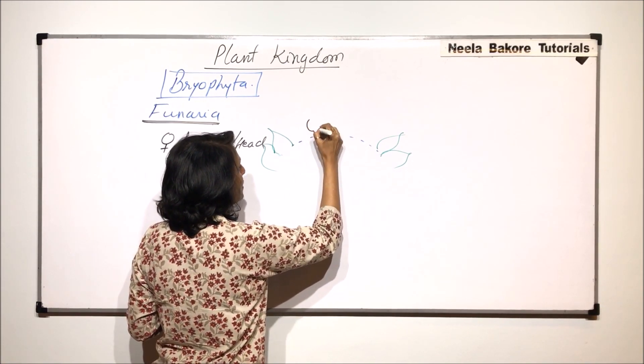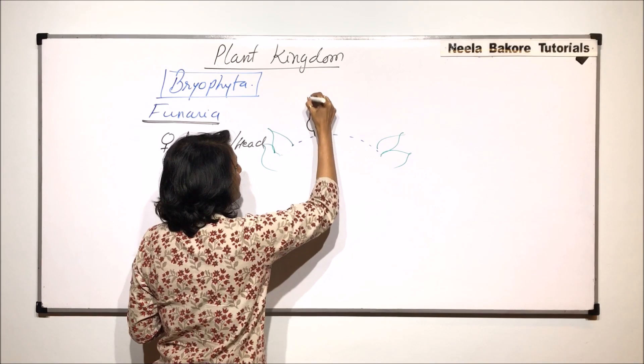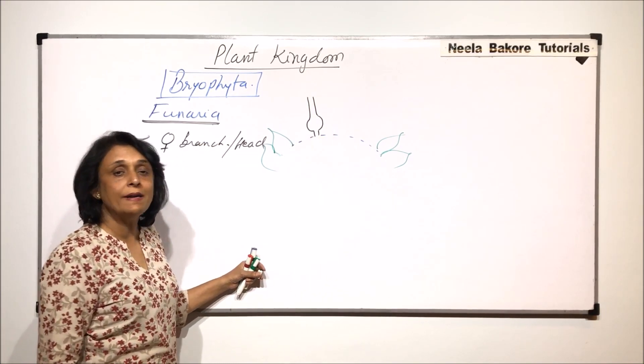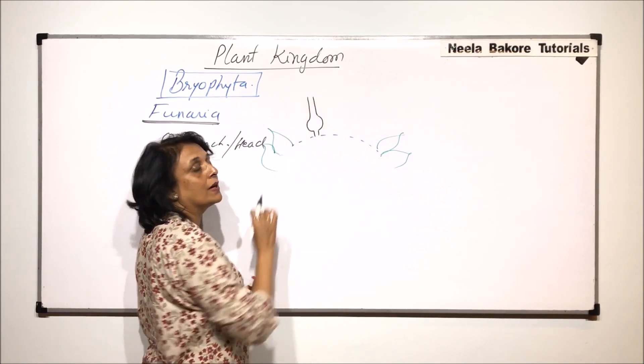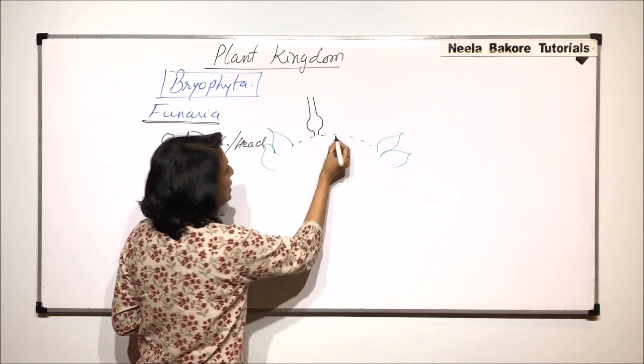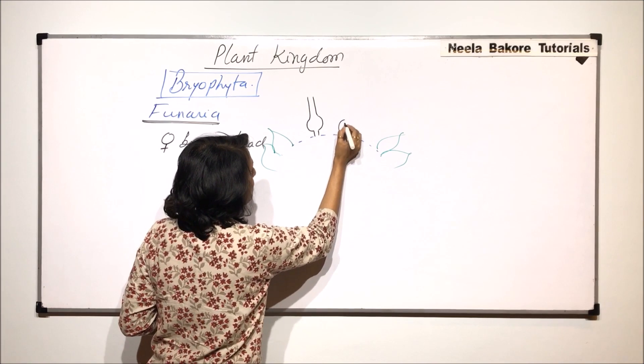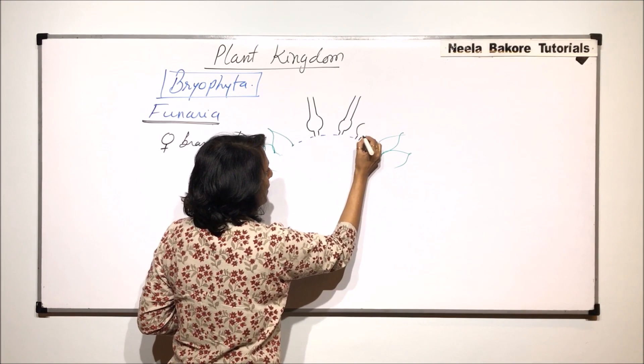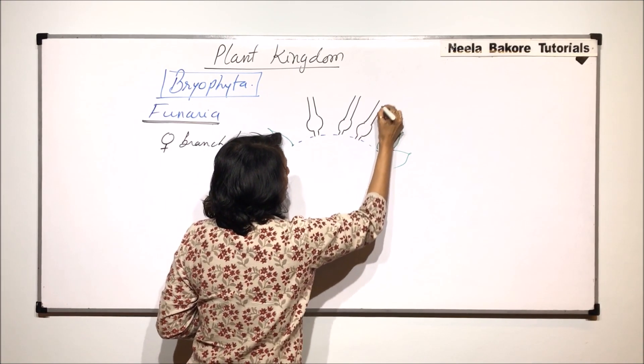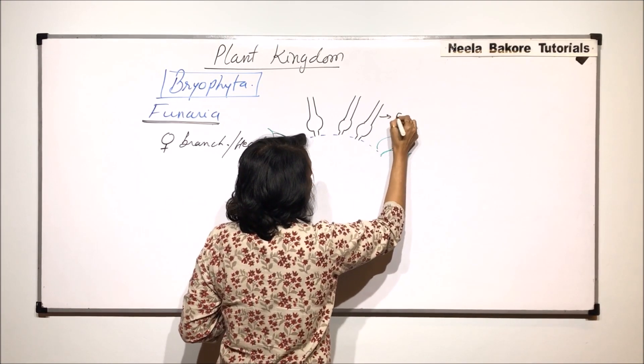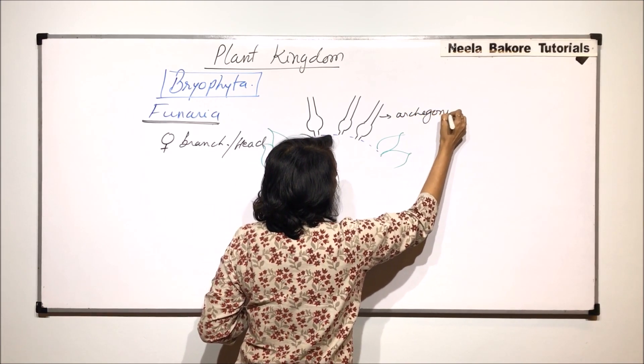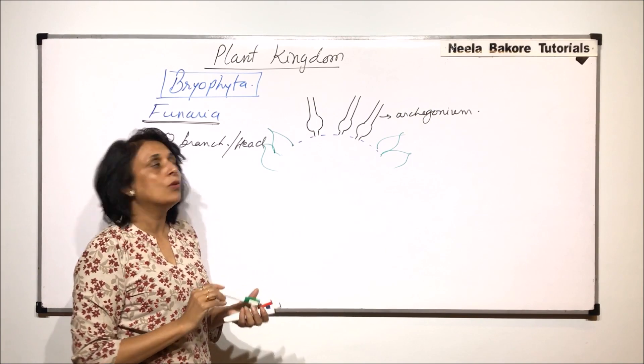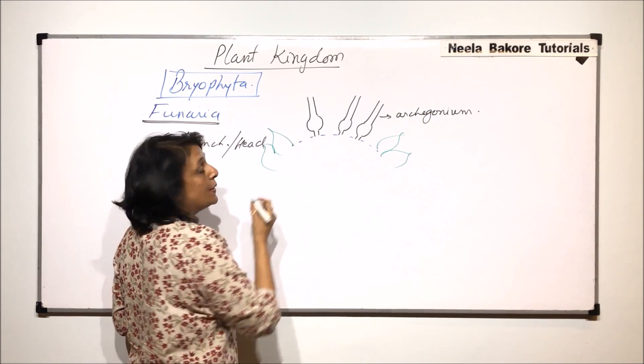The female sex organ has three parts. As we can see here there is a stalk. Then there is a swollen part which is called venter and this long elongated structure is the neck. So there are many such female sex organs and they are known as archegonia. We will draw the structure in detail but this is an archegonium. And in between these archegonia are present the paraphysis.